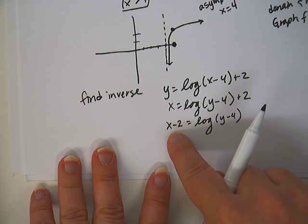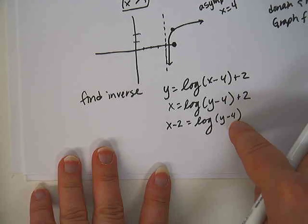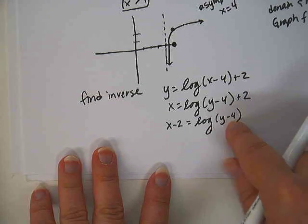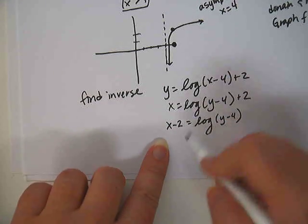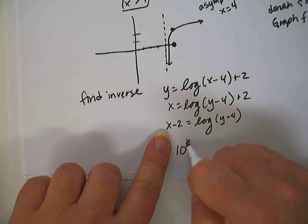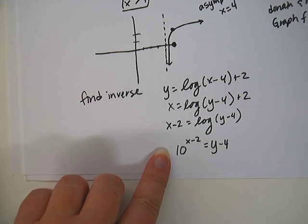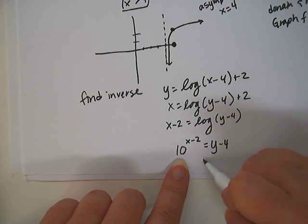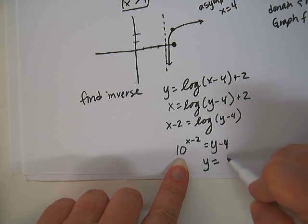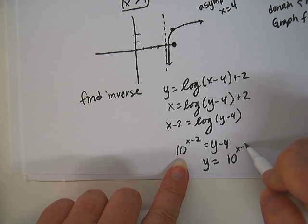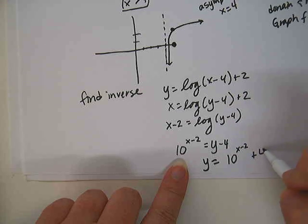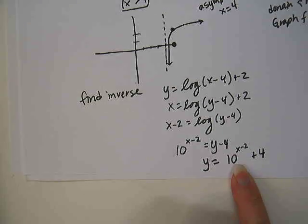What's the exponent? X minus two, and that's the other stuff, right? So we go, the base is ten, the exponent is x minus two, and that is equal to this other stuff, y minus four. So then we solve it for y by adding the four. So ten to the x minus two power plus four.